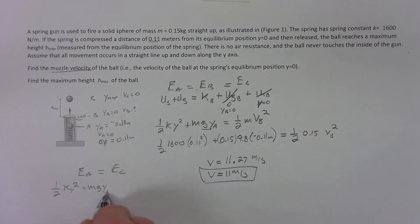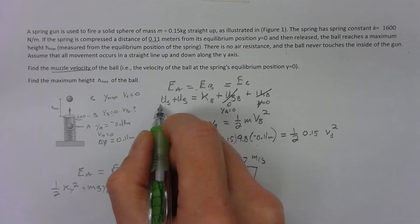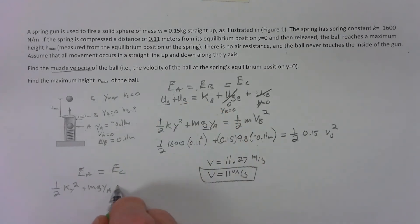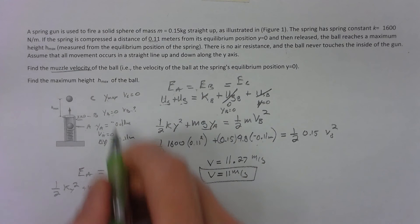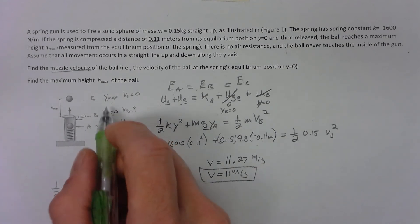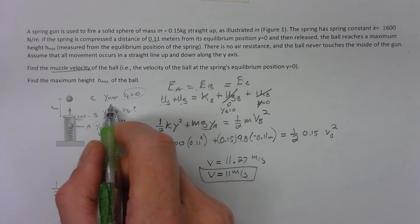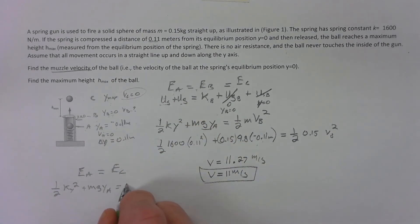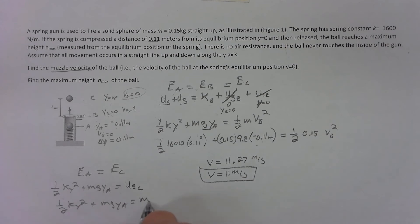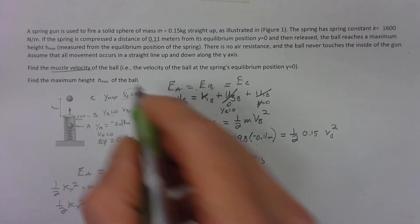I've got one half k y squared plus m g y at a, that's from spring and gravity at a. Now at c, there's no spring, it's not touching the spring. There's no kinetic, it's got a velocity of zero, but it's got U_g, potential energy of gravitation. That's one half k y squared plus m g y_a equals m g y at c, which is our y_max.